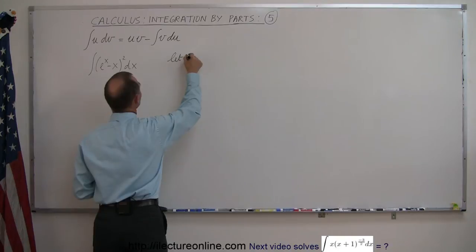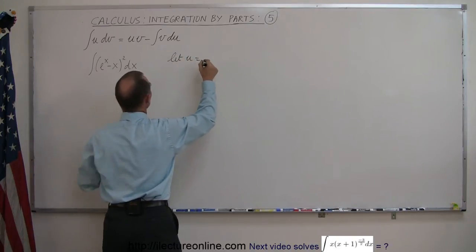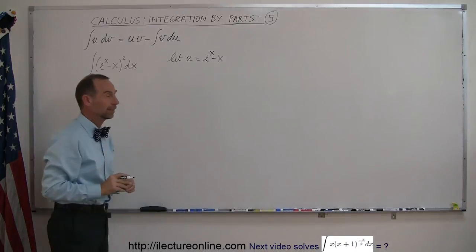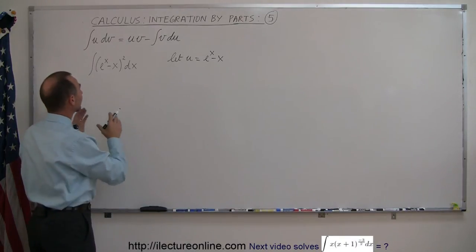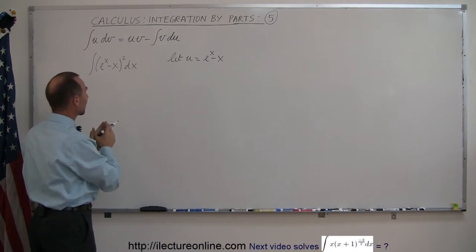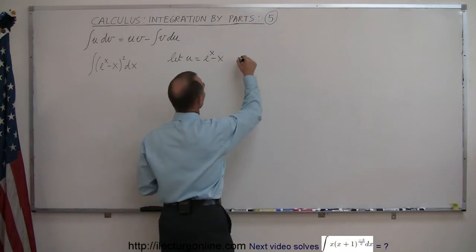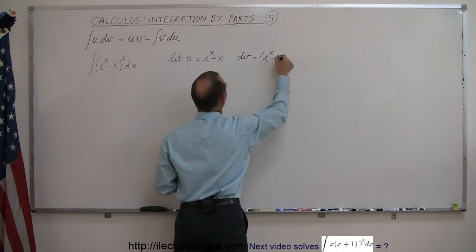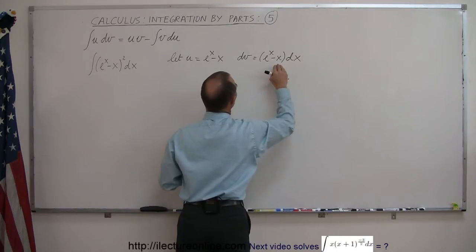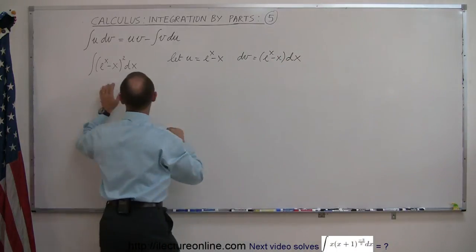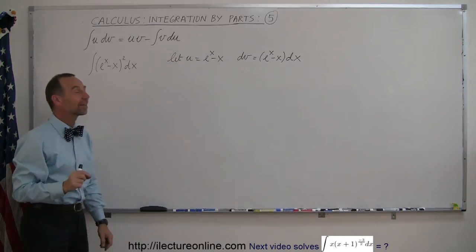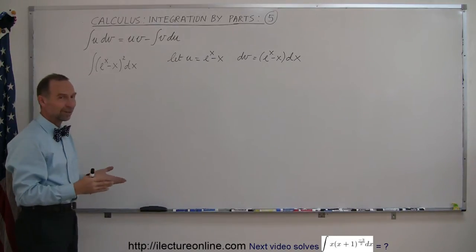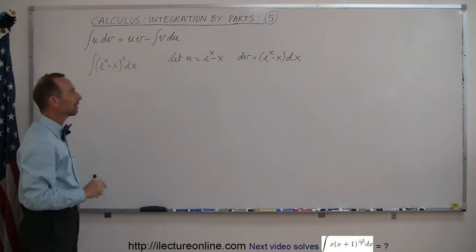Let u equal e to the x minus x to the first power, and then the other e to the x minus x to the first power times dx is your dv. So dv would be e to the x minus x times dx. Notice when you multiply this times this, you get back what you started with. You may not think of that the first time, and that's why it's so nice to look at examples.